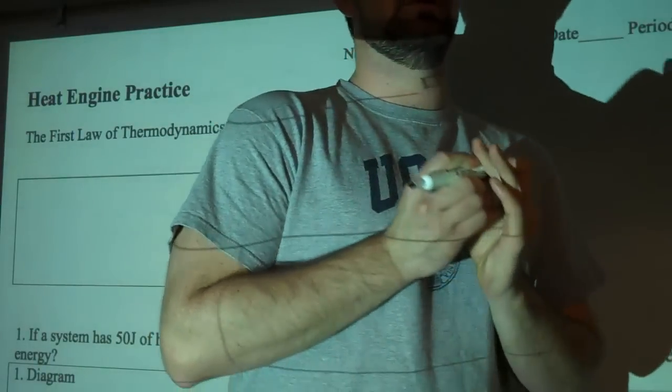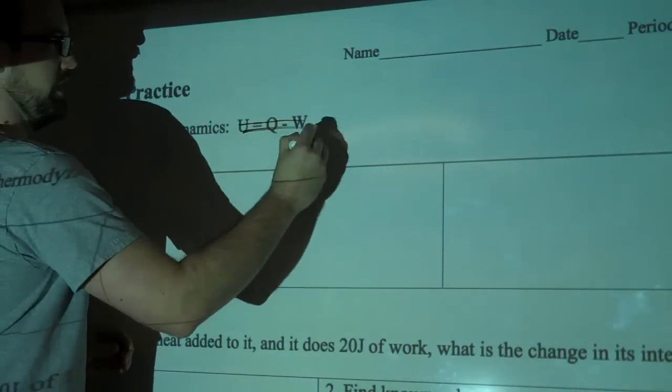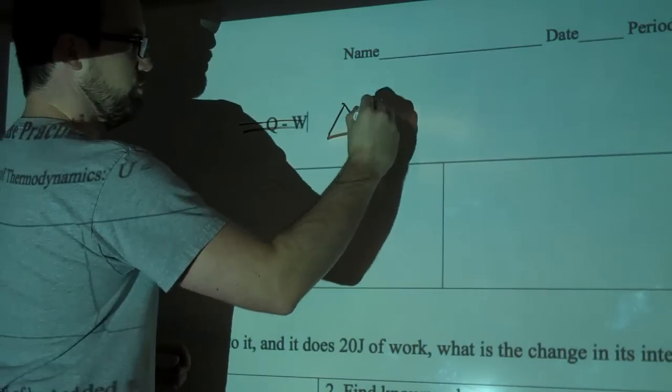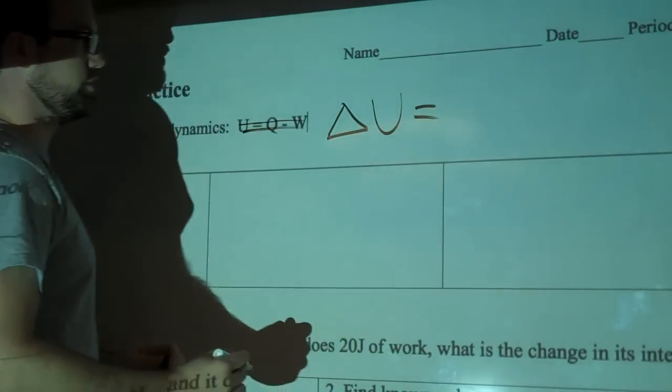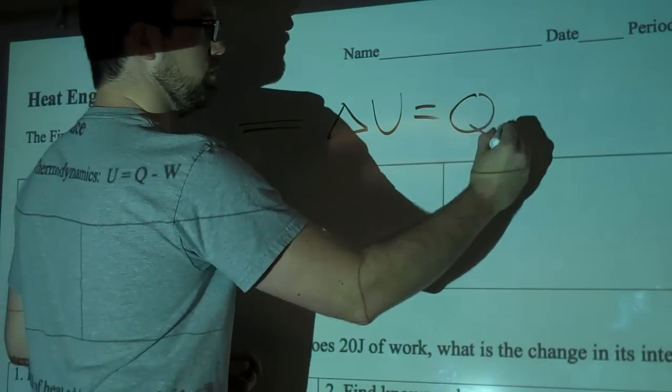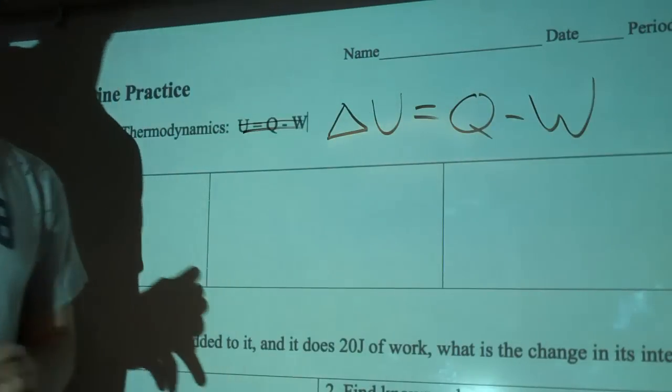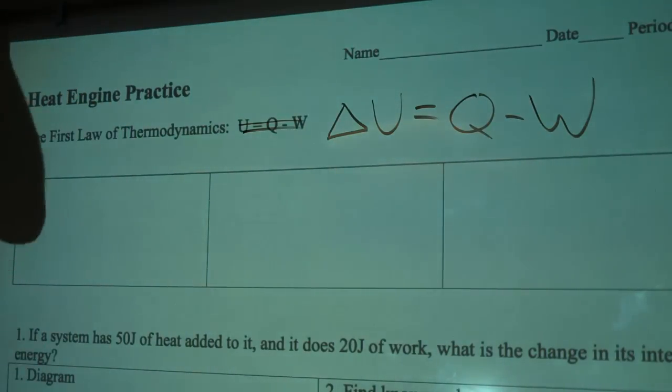And I actually want you guys, if you can cross this out and just write delta U equals Q minus W. Delta U equals Q minus W.